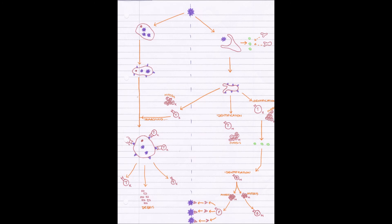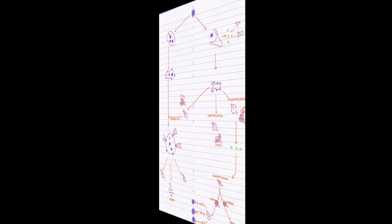That's the cell-mediated response. It's very short and to the point, but it assumes that previously T-cells have been activated in the humoral response so that T-killer cells with the specific complementary shaped antibodies are already floating around.